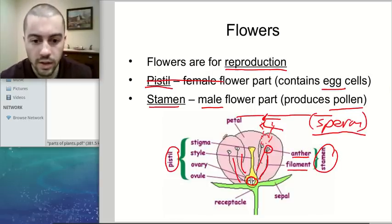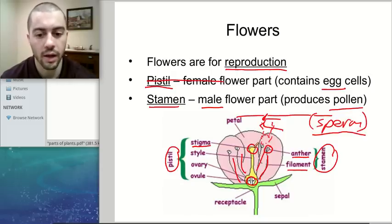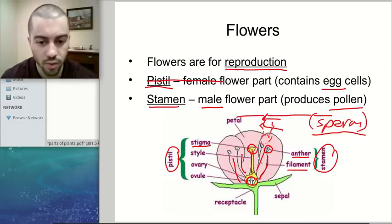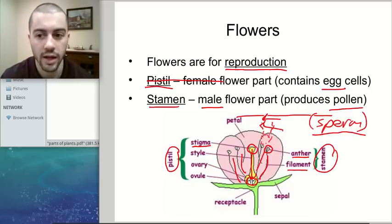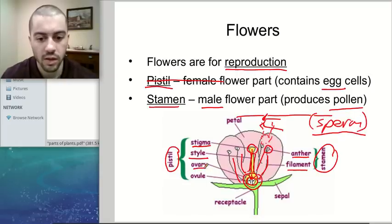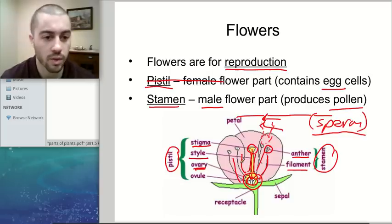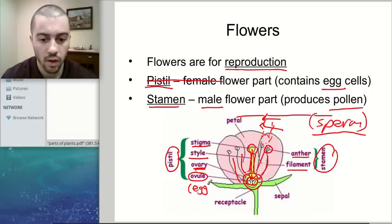For the pistil, it has a bunch of different parts. The top of the pistil is called the stigma — that's the part with an opening that accepts the pollen and allows the sperm cell to travel down through the pistil towards the egg cells. The sperm cells from the pollen need to come into contact with the egg cells in order to fertilize the egg. The tube-like structure in the pistil is called the style. At the bottom where the egg cell is actually held, these are called the ovaries — which contain the egg cells, also called ovules.